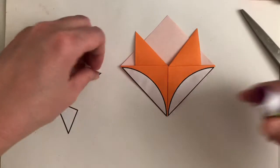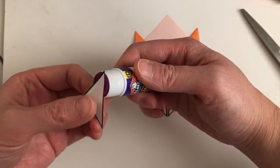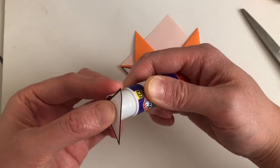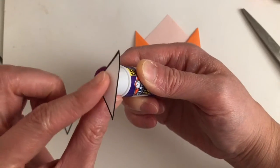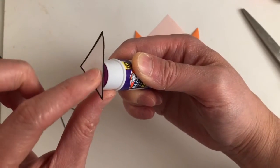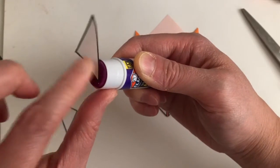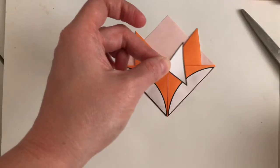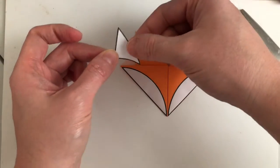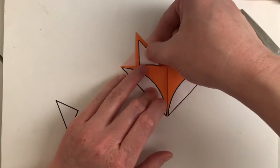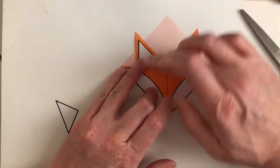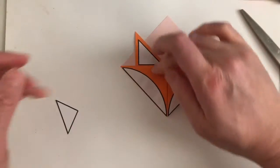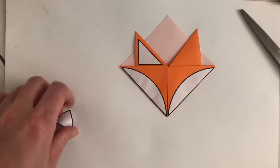Next we'll take a triangle, get some glue on it, and glue it onto our fox's ear. And do the same thing for the other side.